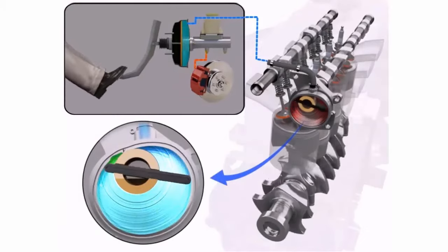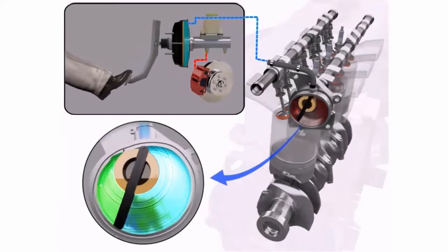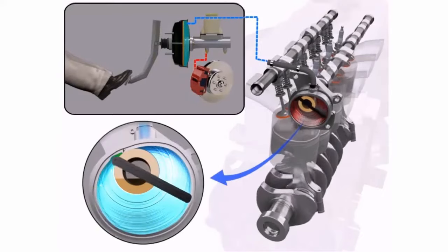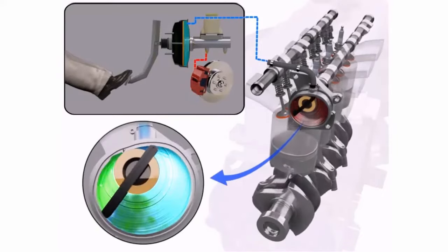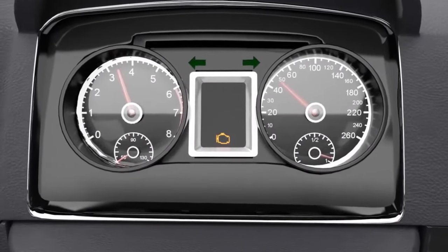When this happens, the brake pedal becomes very hard to press. Failing vacuum pumps can also cause problems with the climate control system and might make the engine light turn on.